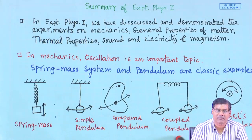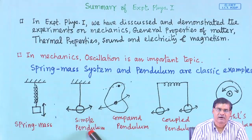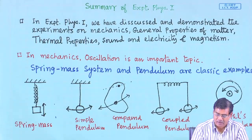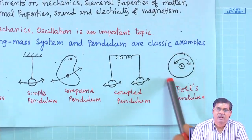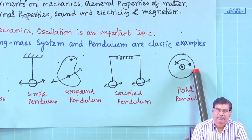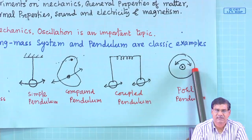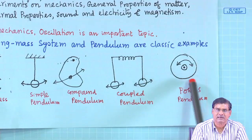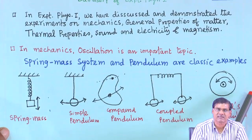When two pendulums are coupled with a spring, we call it a coupled pendulum; their oscillation is slightly different from a single pendulum. Also, Pohl's pendulum — a disc oscillating in a magnetic field — is a classic example demonstrating free oscillation, damped oscillation, and forced oscillation. All of this we have discussed in Experimental Physics 1.